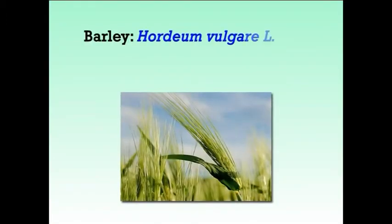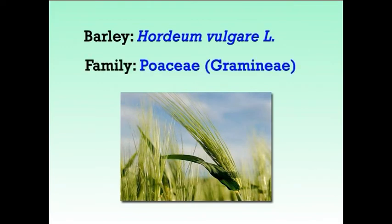In the earlier lecture, we discussed about two rabi crops, that is wheat and chickpea. Today we are going to discuss about barley, which is one of the most important cereal rabi crops in India. Barley, whose scientific name is Hordeum vulgare, belongs to the family Poaceae or Gramineae, having chromosome number 2n equal to fourteen. It is a rabi crop in India, which is similar to wheat in many respects.